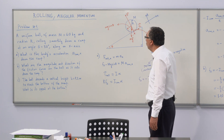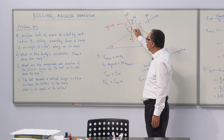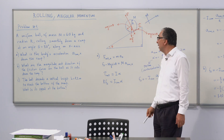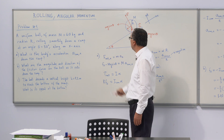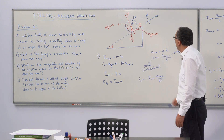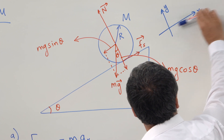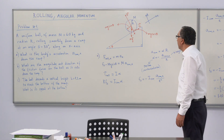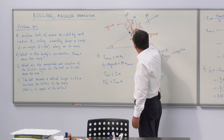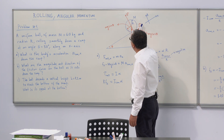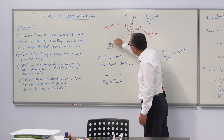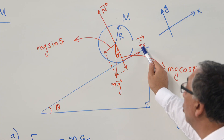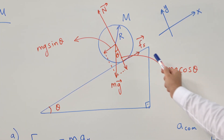In this problem we have an incline. At the top of the incline we have a uniform ball of mass 6 kilograms with an unknown radius. The incline angle is 30 degrees. We choose the x-axis pointing down the incline and the y-axis perpendicular to it. The ball is rolling without slipping.